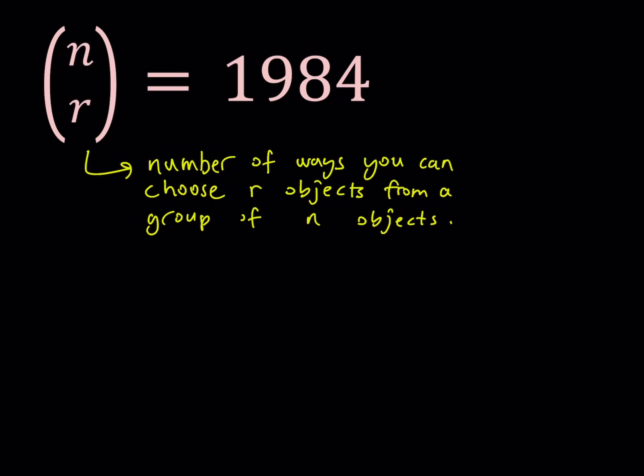Hello everyone. In this video we're going to be solving a combination equation. We're doing counting for the first time, so I'm excited. Let's get started. We have n choose r equals 1984, and we're solving for n and r values. n choose r is defined as the number of ways you can choose r objects from a group of n objects.